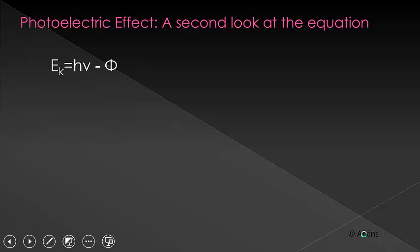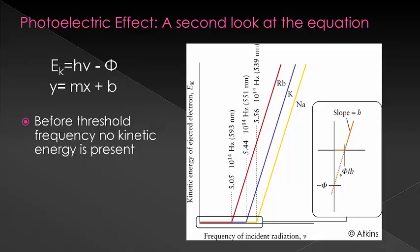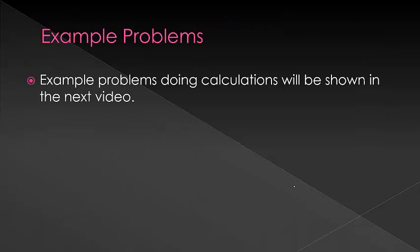Let's look at this equation one more time. Since the work function is a constant, as well as h, we only have two variables and they're related in a linear fashion. We can look at this as y equals mx plus b. Here's a graph from the Atkins book that shows this. You can see that h is the slope. Because we are dealing with a physical phenomenon that doesn't occur until a threshold is met, the graph reads zero until we reach the threshold frequency, at which point we get a linear relationship between the frequency and the kinetic energy. Example problems for the calculations will be shown in the next video.